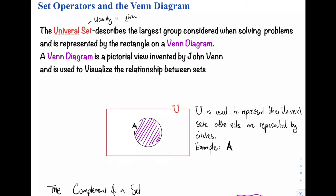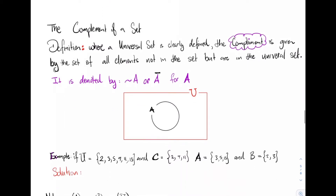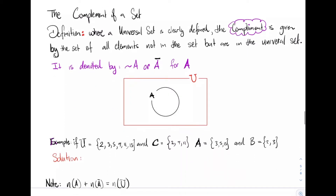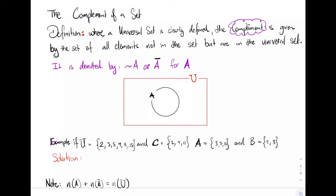All those elements that are in A are usually written in the purple section. Then we move on to define what we call the complement of a set. When we talk about the complement of a set, it is usually with respect to the universal set. Where the universal set is clearly defined, the complement is given by the set of all elements that are not in the set, but are still in the universal set.